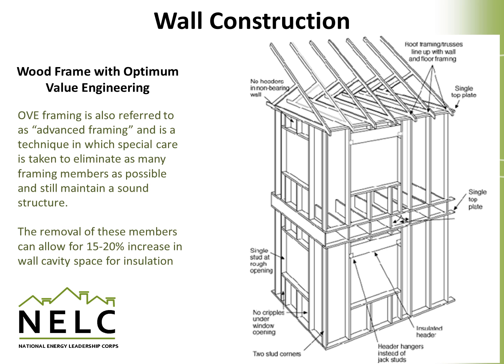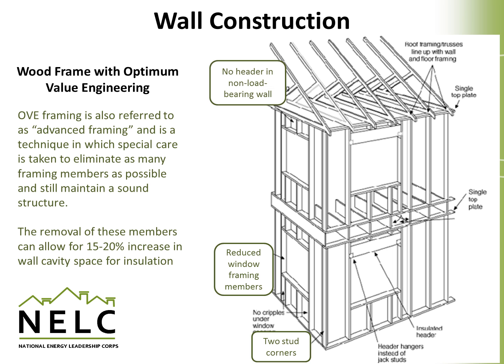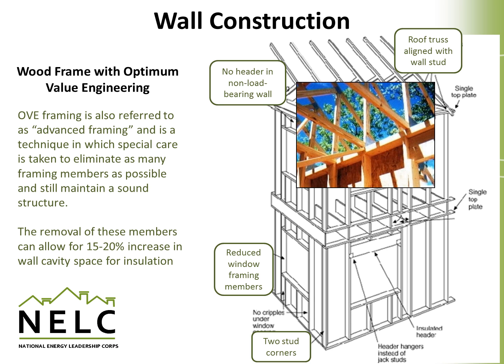Looking at advanced or optimum value engineering framing technique and some key features: one feature would be using just two wall studs at corners as opposed to the traditional three or four stud framing corners. Another example is at windows, where we can reduce the number of framing members just by shifting the techniques we use to build the walls. We often use headers over windows and doors even if it's a non-load-bearing wall. Optimum value engineering can eliminate those headers and create more room for insulation. Another important feature is the alignment of the roof trusses with the wall studs — here's a close-up image of how each roof truss spans across the wall surface directly over top of a wall stud.